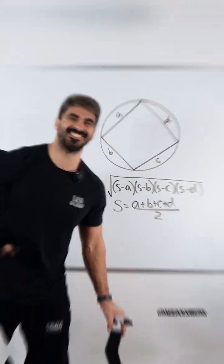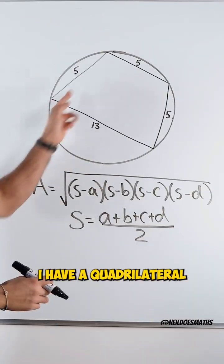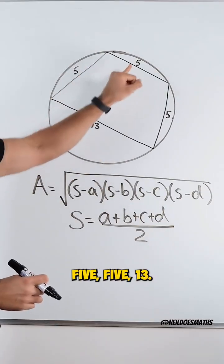Let's do an example. So take a look at this example. I have a quadrilateral with side lengths 5, 5, 5, 13.